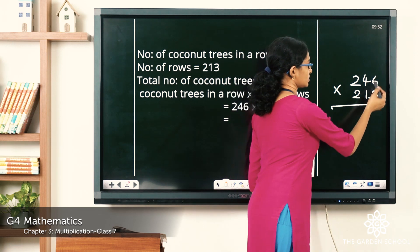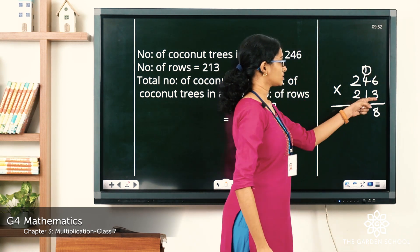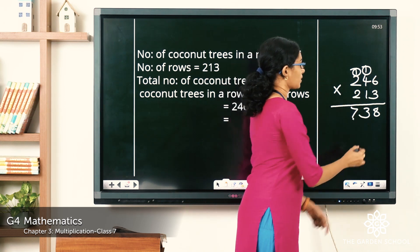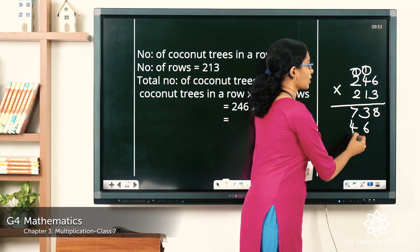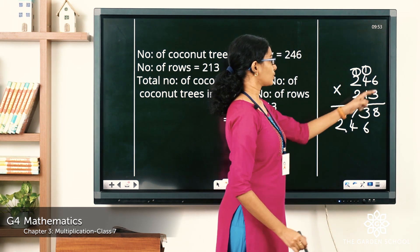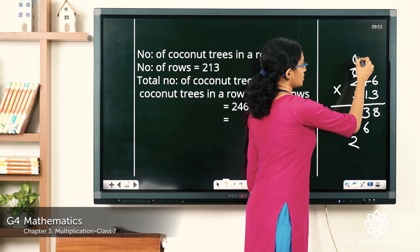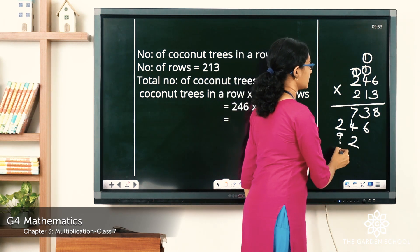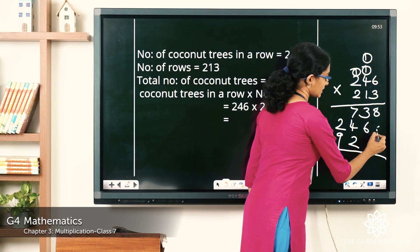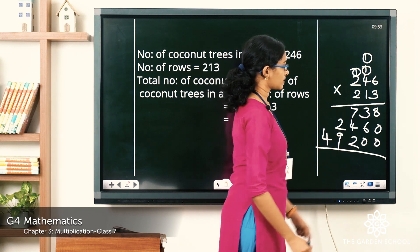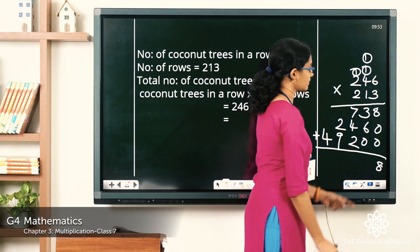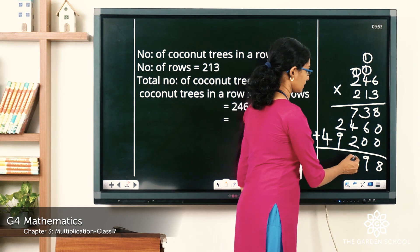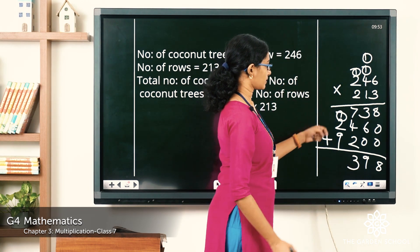For the multiplication of 246 × 213: 6 × 3 = 18, carry over 1; 3 × 4 = 12 plus 1 = 13, carry over 1; 3 × 2 = 6 plus 1 = 7. Now for the tens digit: 1 × 6 = 6; 1 × 4 = 4; 1 × 2 = 2. Now for the hundreds digit: 2 × 6 = 12, carry over 1; 2 × 4 = 8 plus 1 = 9; 2 × 2 = 4. Let us insert zeros to correct the place values. Adding: 8 + 0 + 0 = 8; 3 + 6 + 0 = 9; 7 + 4 + 2 = 13, carry 1; 9 + 1 = 10 plus 2 = 12, carry 1.